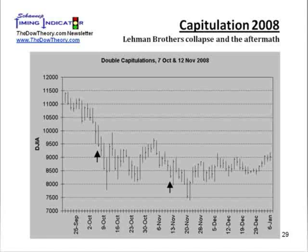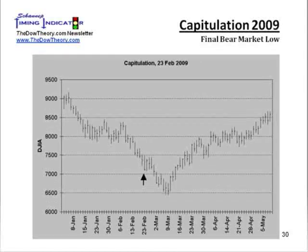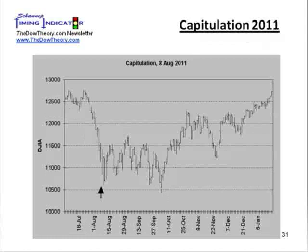In 2008, following the Lehman Brothers collapse in September, there was a 20% rise into 2009 — 24% on the S&P. In 2009, the market rolled over with the downtrend resuming down 20% on the industrials and 27% on the S&P, with the lows signaled once again by capitulation. Last summer was our most recent capitulation. Nine of these 15 signals have occurred within 2% of the lows. And a traditional Dow Theory buy signal has followed every time. Therefore, when capitulation occurs, we begin buying with a 25% position.